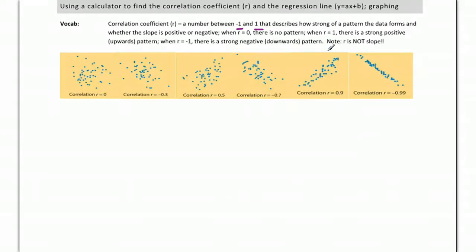When r is 0, it's not positive or negative, then there's no pattern at all. When r is 1, you have a really strong upwards pattern. When r is negative 1, you have a very strong downwards pattern.